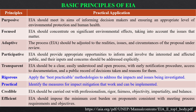Fifth, transparent — EIA should be a clear, easily understood, and open process with early notification procedures, access to documentation, and a public record of decisions taken and reasons for them. Sixth, rigorous — apply the best practical methodologies to address the impacts and issues being investigated. Seventh, practical — identify measures for impact mitigation that work and can be implemented. Eighth, credible — EIA should be carried out with professionalism, rigor, fairness, objectivity, impartiality, and balance. And last is efficient — EIA should impose the minimum cost burden to the proponents consistent with meeting process requirements and objectives.